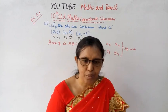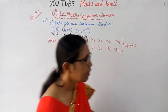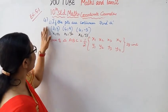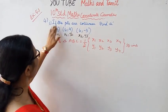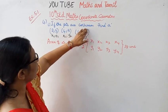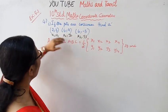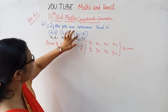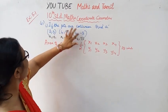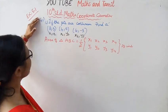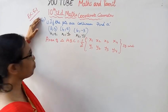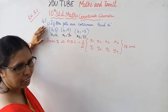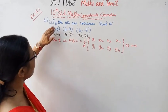Hello students, welcome to Maths and Tamil channel. This is Exercise 5.1, fourth of the first subdivision. If the points are collinear, find it. The points are (2, 3), (4, A), and (6, -3).